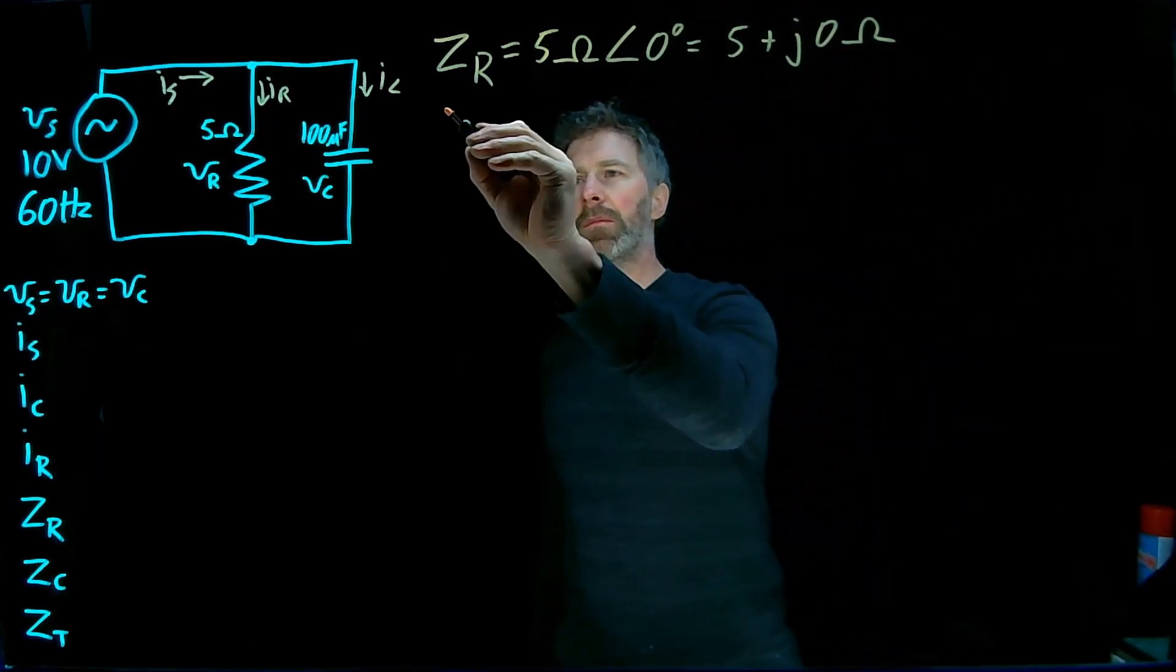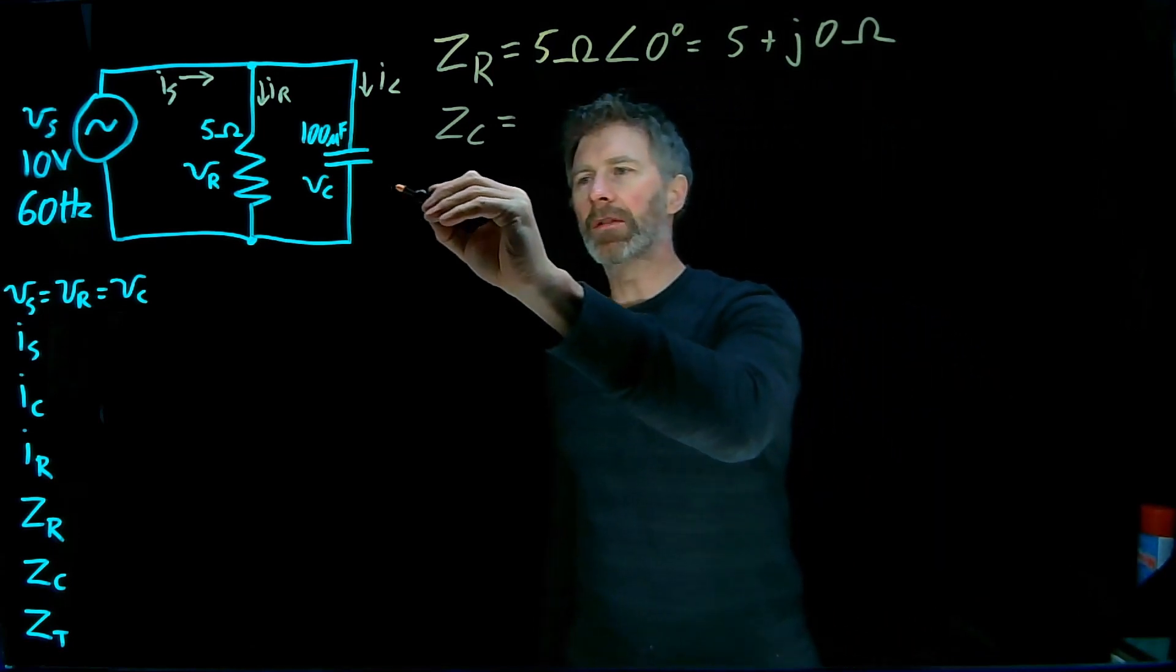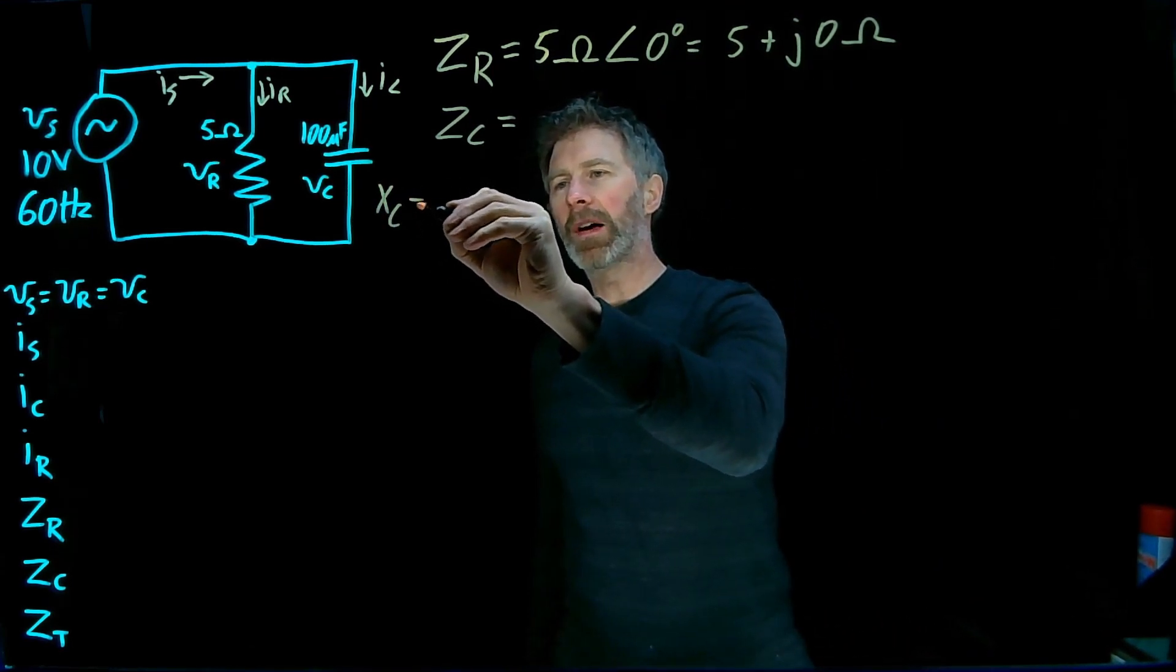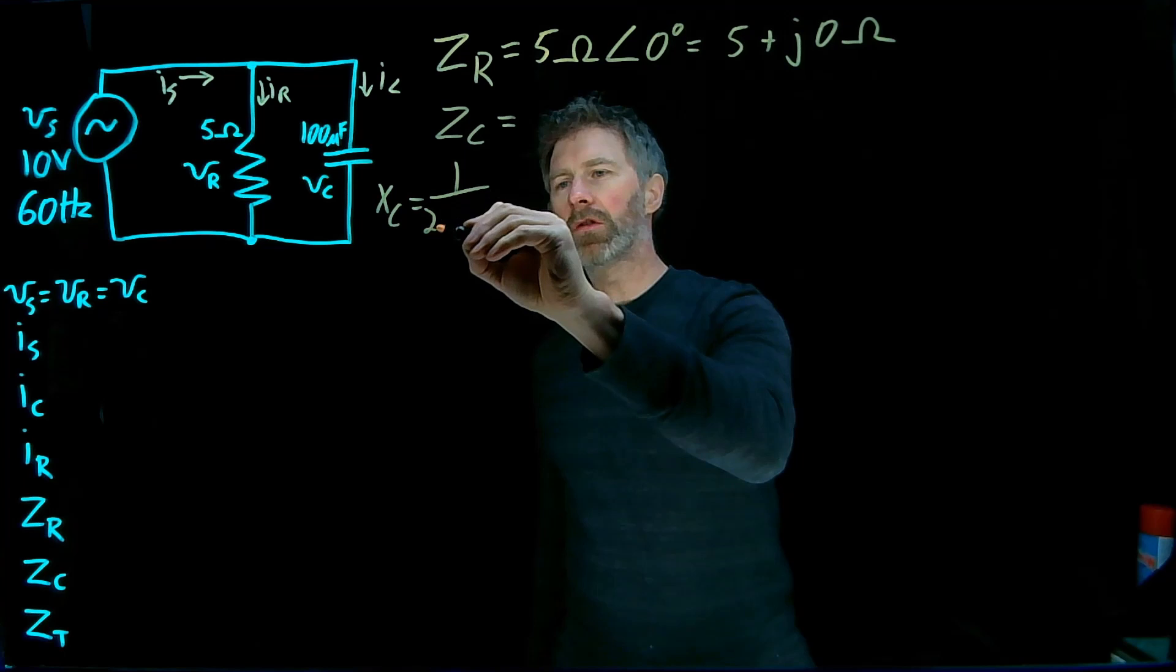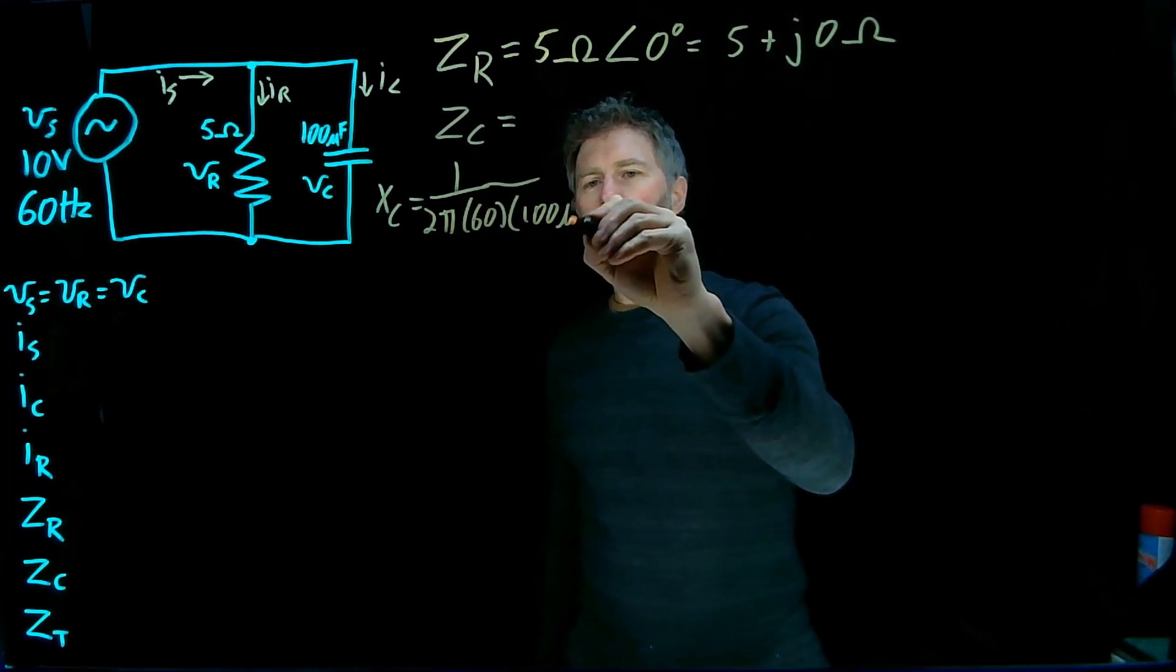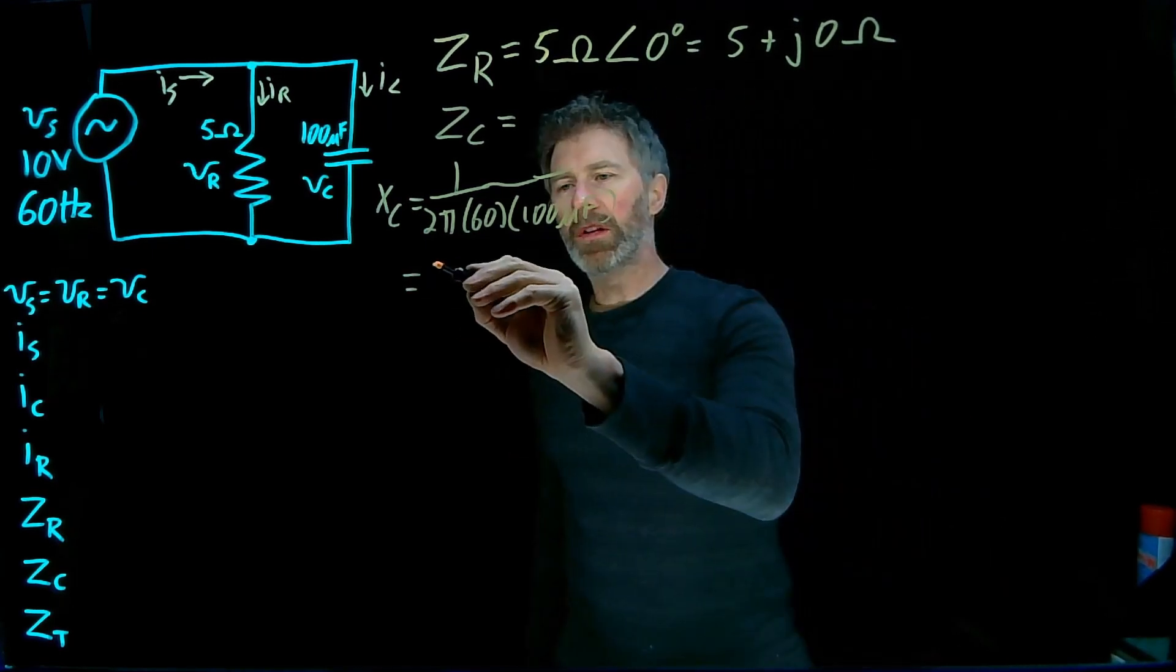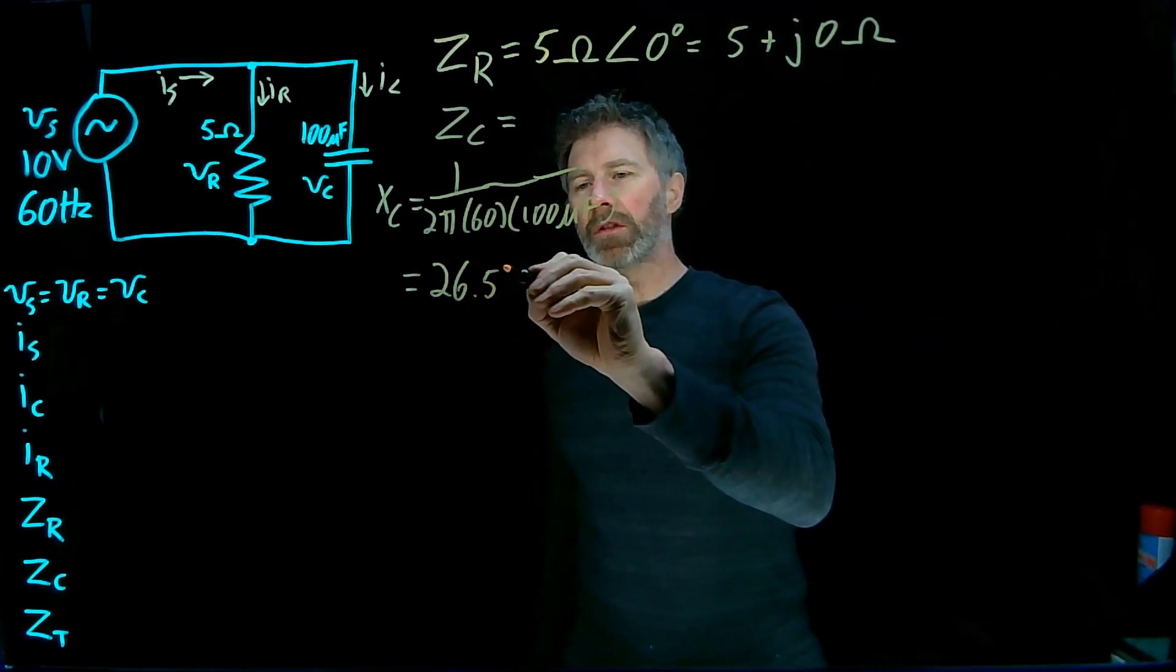And the impedance of that capacitor, it's going to be based on the reactance of it. Reactance for a capacitor is 1/(2π × frequency × capacitance). Plug those numbers into a calculator, and we get a reactance of 26.526 Ohms.